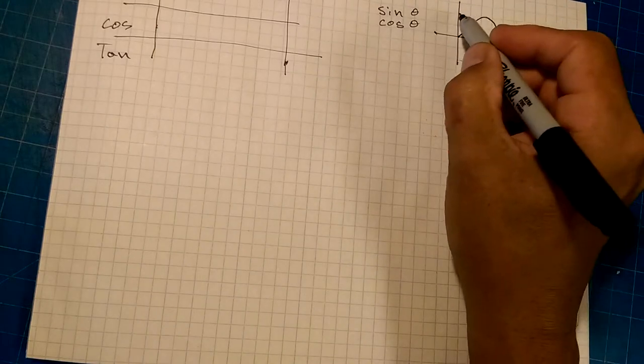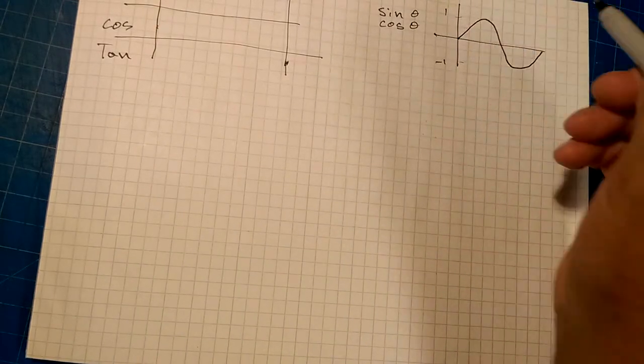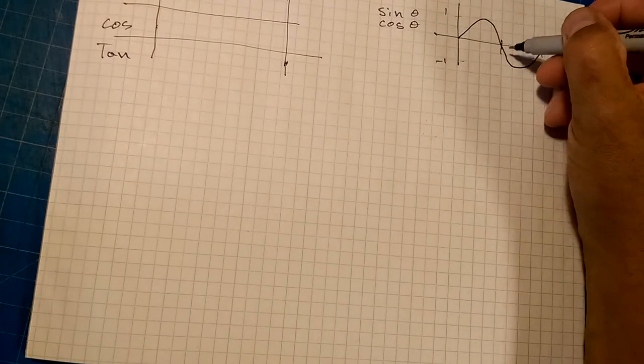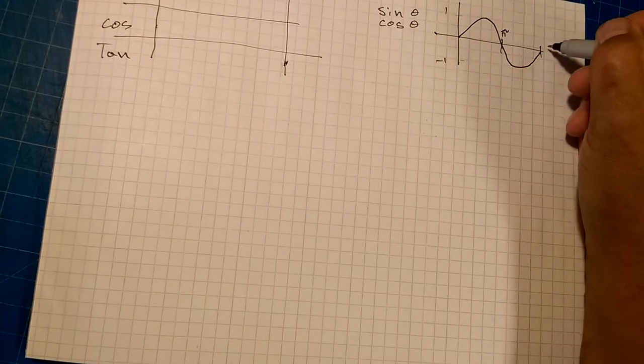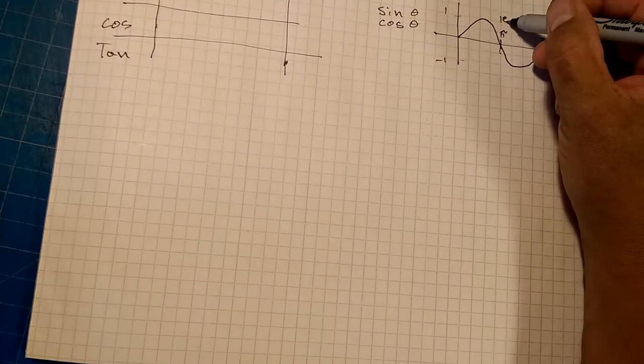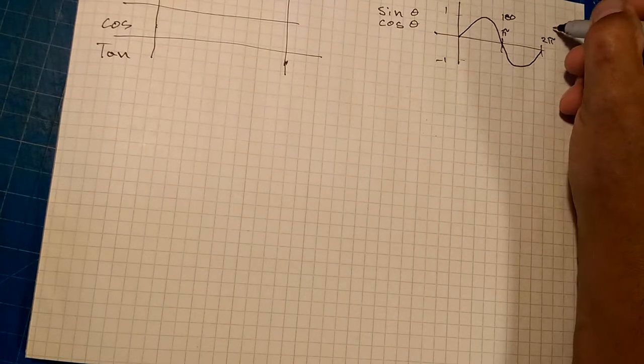Something like that, going from negative 1 up to 1 with a zero point here. And I remember a few things about this. This is pi radians and this is 2 pi radians and that's the same thing as 180 degrees and that's 360 degrees.